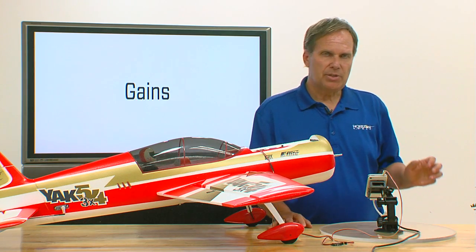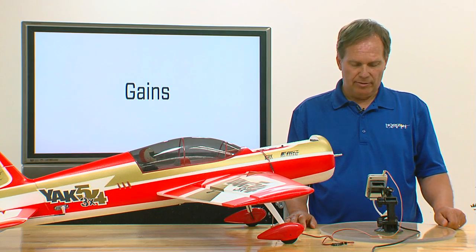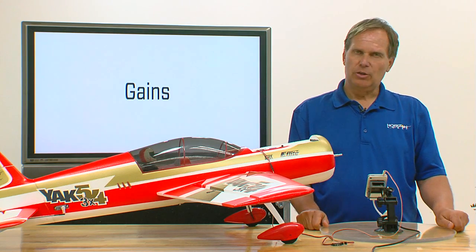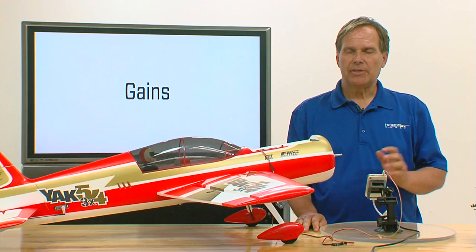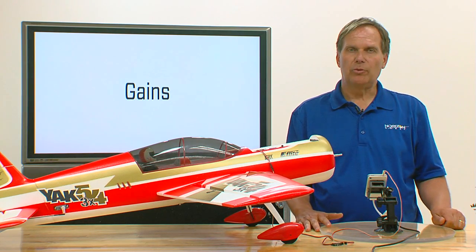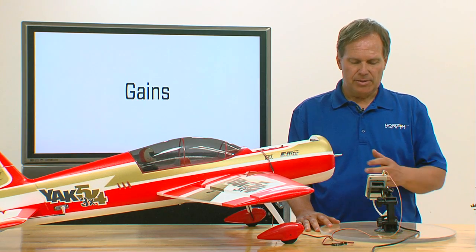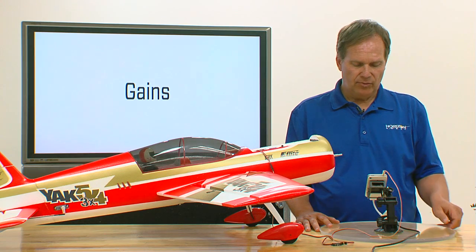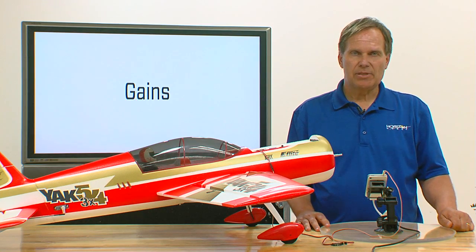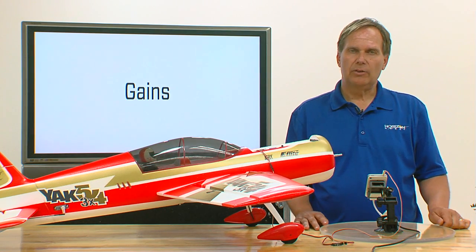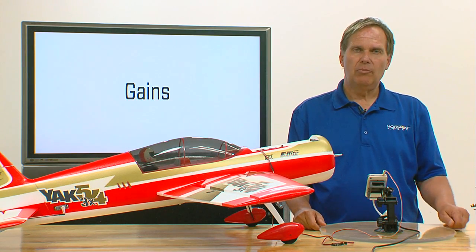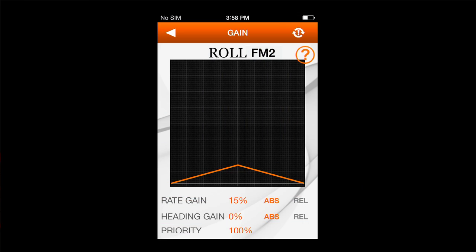With this particular airplane I know from experience the roll gain needs to be pretty low. I'm going to start with a roll gain setting of 15% for my fly-around mode. With some aircraft, even those low rates could cause oscillation. For heading gain in normal fly-around mode, I'm not going to use any heading gain on roll — I'll save that for flight mode 3. The roll rate gain is set to 15% and we'll leave this on absolute, meaning whatever value you put in the program is the gain value you'll get.